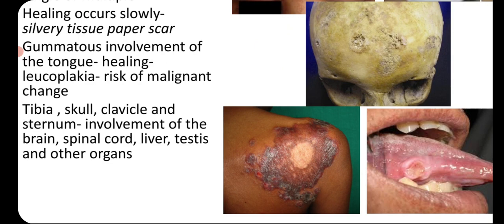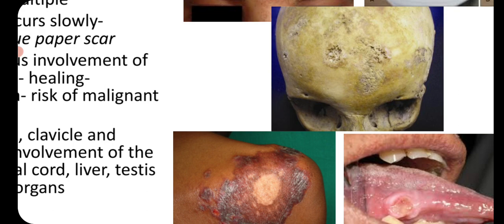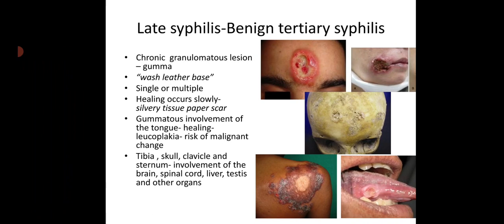The gumma can occur in the tibia, skull, clavicle, and sternum, and there can also be involvement of the brain, spinal cord, liver, testis, and other organs.